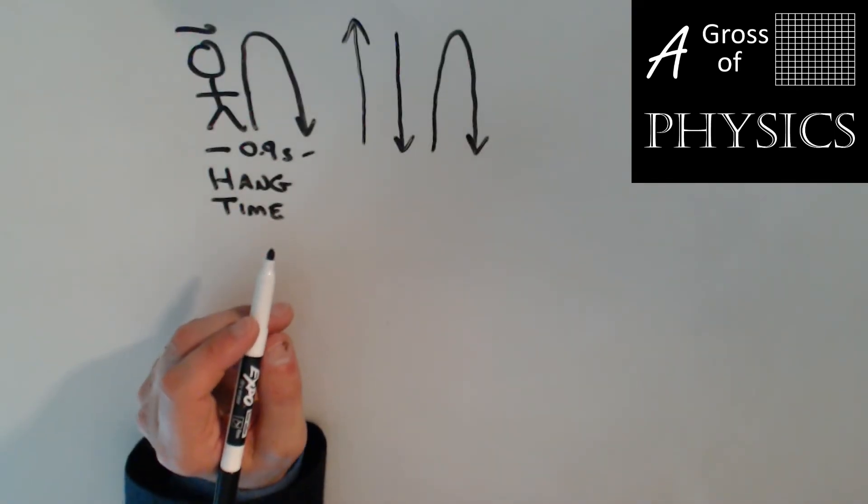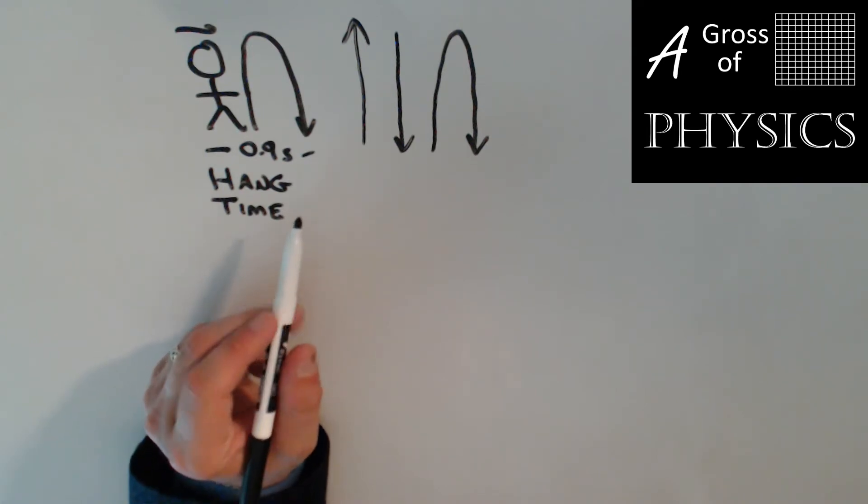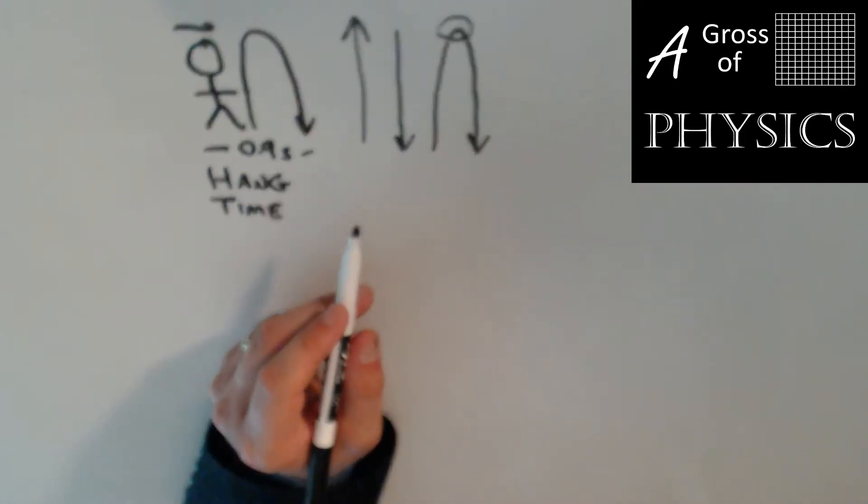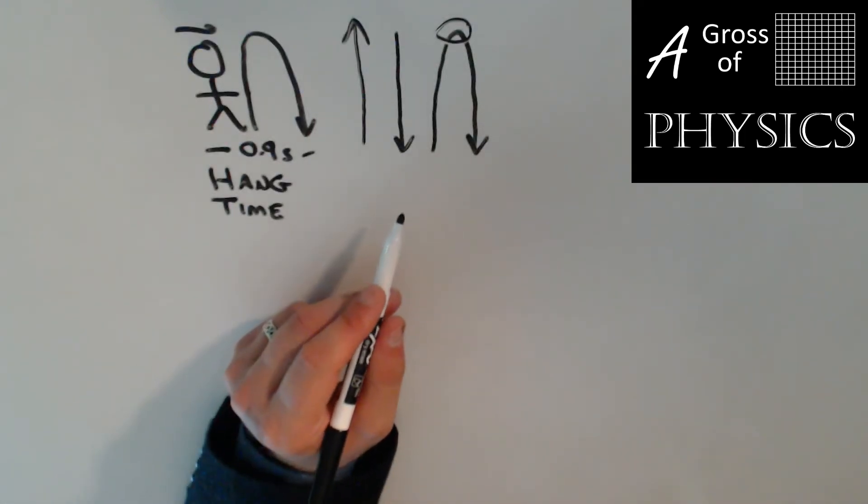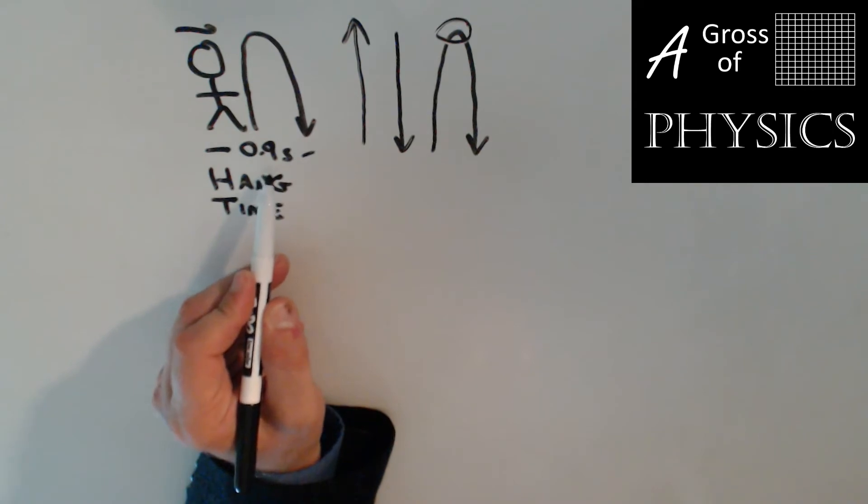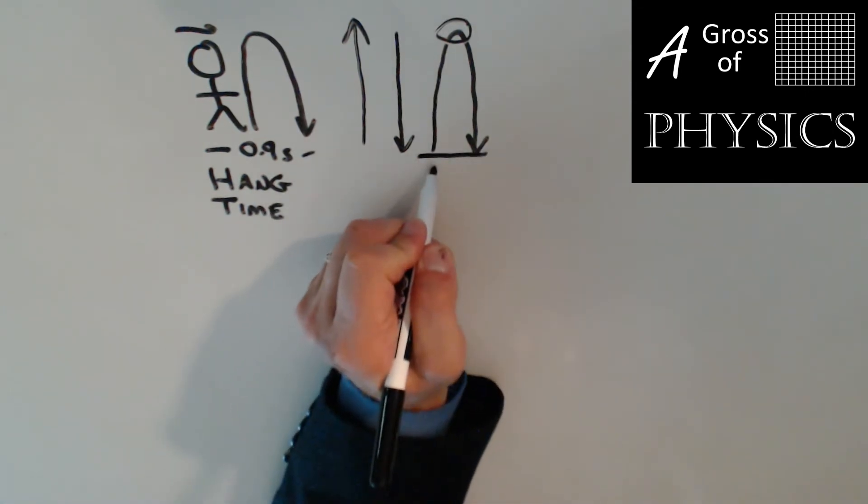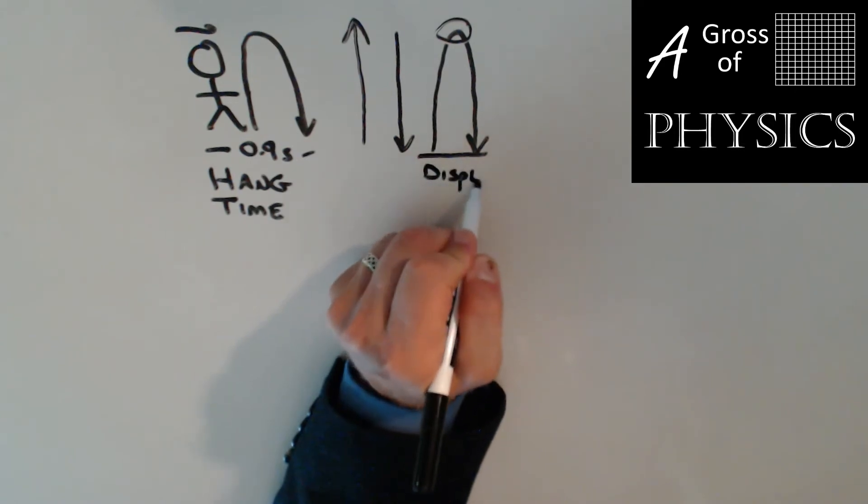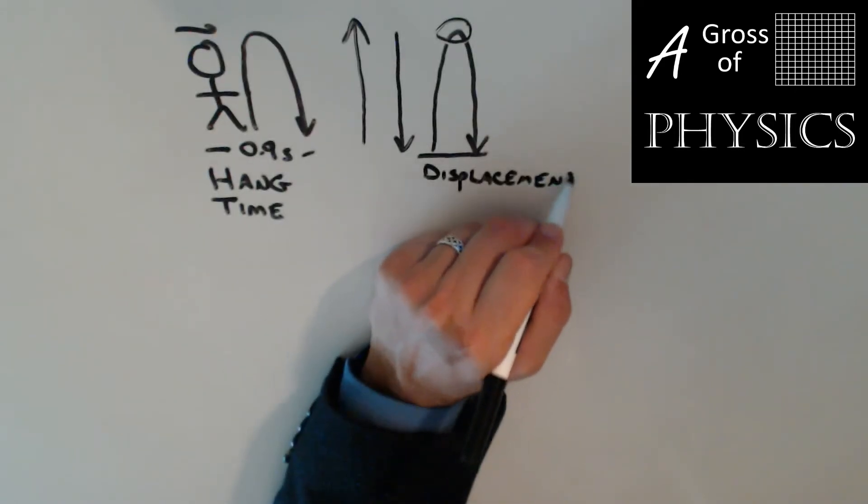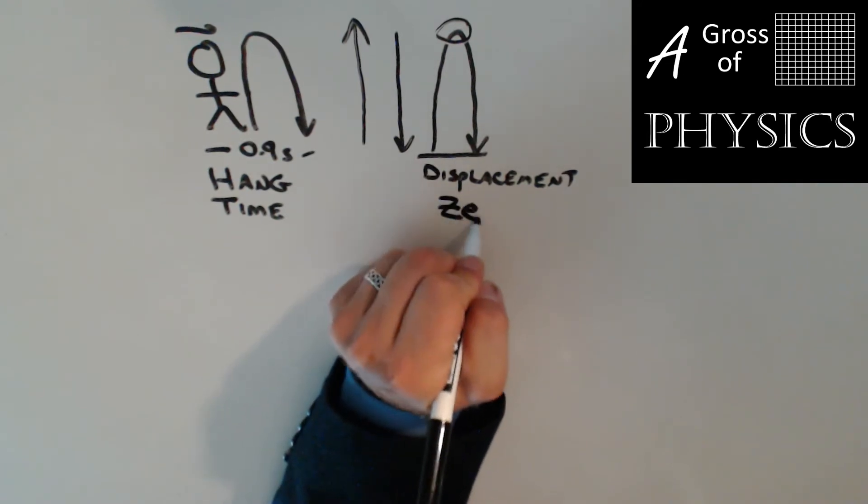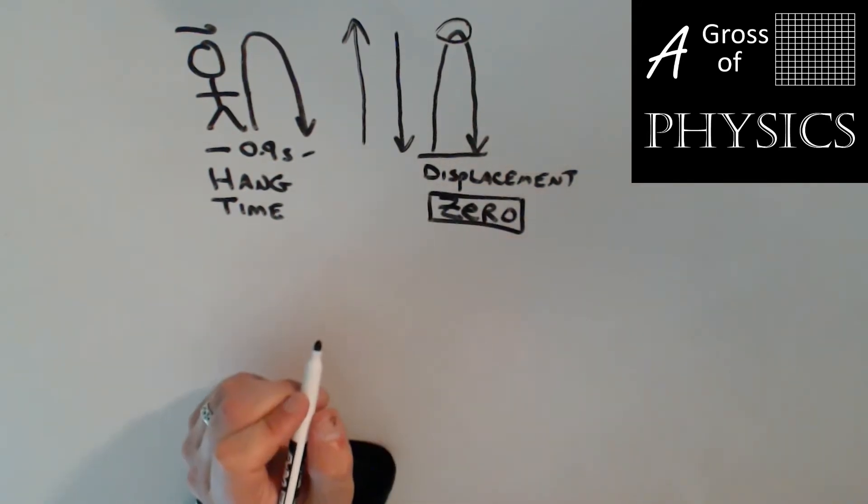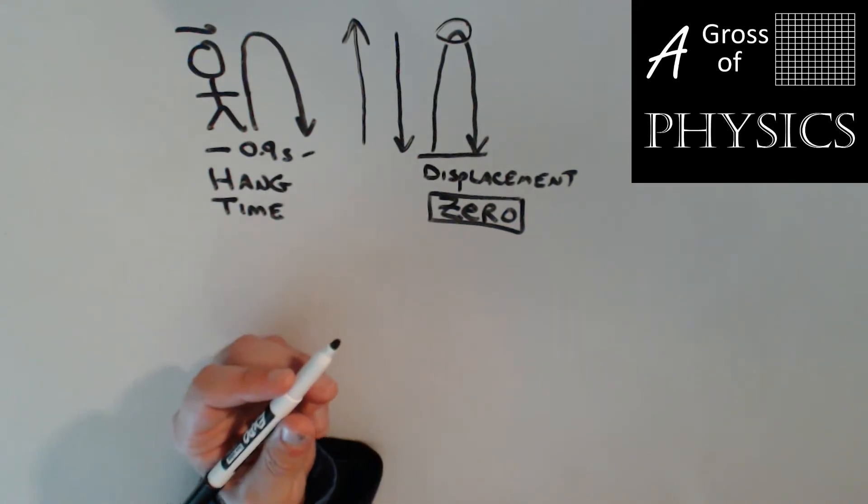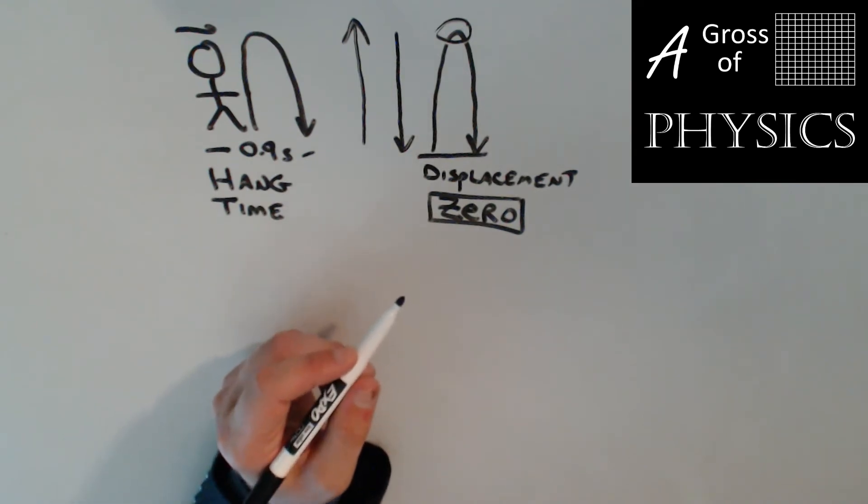Now the reason each one of these can be useful for us is because we may need to find different things about the problem. For example, if you want to find your maximum height, that only occurs halfway through the problem. If we try to find the max height for the 0.9 seconds, we should get the fact that we're back on the ground. So the displacement should be zero. So depending upon the problem, we need to either look at the entire trip or half of the trip. And in this case, we want to find out how fast they leave the ground.